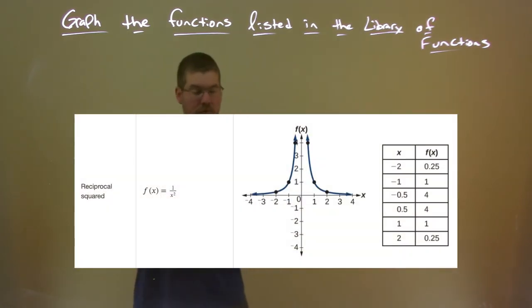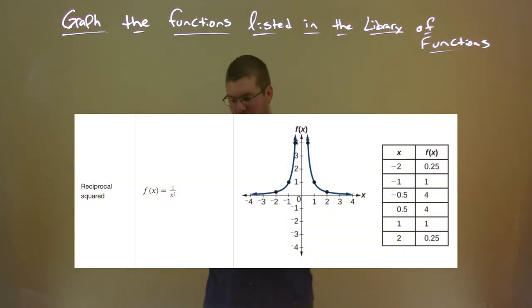The reciprocal squared function, f of x equals one over x squared, generally has this shape. It's flowing, almost like a volcano coming up. That's the basic function - again, we have a vertical and a horizontal asymptote.